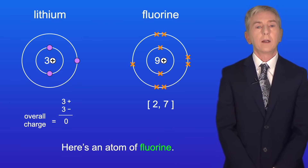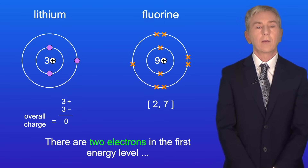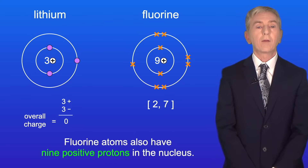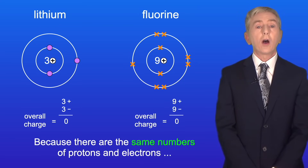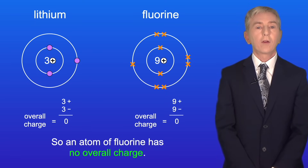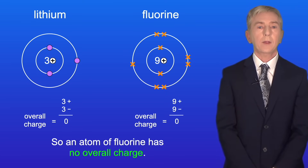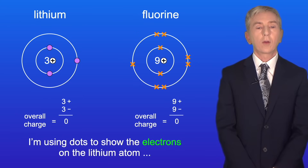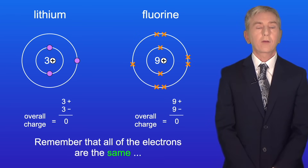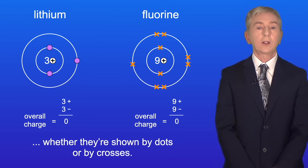Here's an atom of fluorine. A fluorine atom has nine electrons: two in the first energy level and seven in the outer energy level. Fluorine atoms also have nine positive protons in the nucleus. Again, because there are the same numbers of protons and electrons, the charges cancel, so an atom of fluorine has no overall charge. I'm using dots to show the electrons on the lithium atom and crosses to show the electrons on the fluorine atom, but remember that all electrons are the same whether shown by dots or crosses.